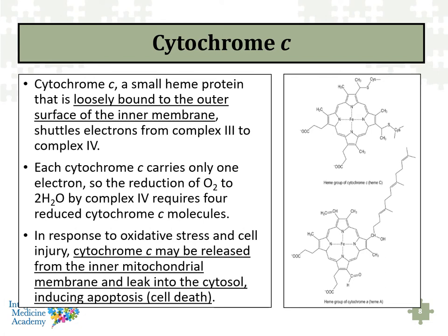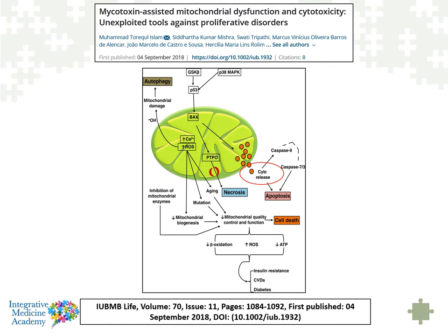Various mycotoxins have a negative impact on mitochondria, triggering a release of cytochrome C. Cytochrome C then activates a series of enzymes called caspases, and caspases lead to apoptosis. If the cell is damaged or diseased, we want to get rid of it to make room for a new cell or new mitochondria. The inherent wisdom of the body has a process to get rid of old, damaged, and diseased cells. Apoptosis is a natural process that occurs through the release of cytochrome C, and it's not just mycotoxins — other chemical reactions can also cause the release of cytochrome C.